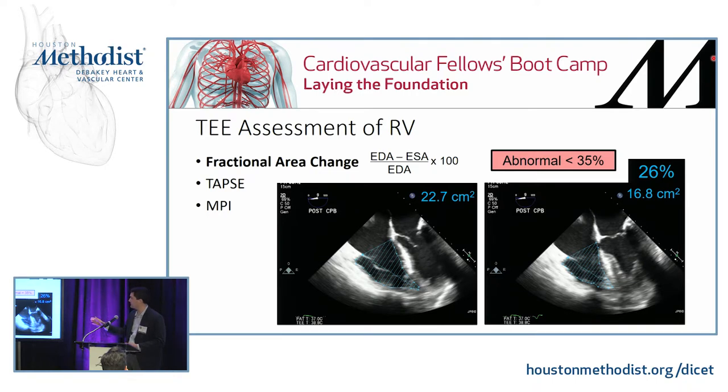The RV is clearly dilated, and again the atrial septal wall is also bowing over.